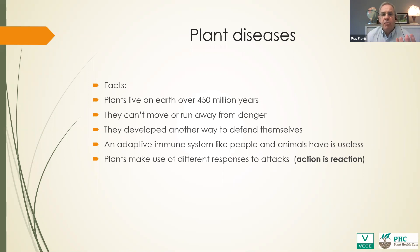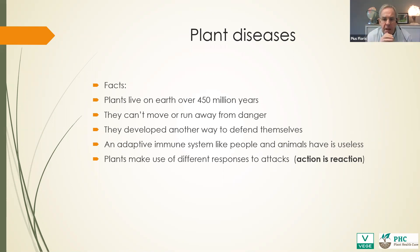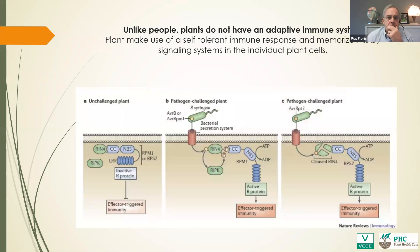Plants have been living on this earth for 450 million years. They cannot run away from danger. They are rooted in the ground. Like people, we have adaptive immunity systems, but for plants this is really useless because they cannot run, they cannot hide. So they have different systems to respond to attacks, and they make these decisions at the moment of attack. Basically, action is reaction for plants. Unlike people, plants don't have an adaptive immune system.